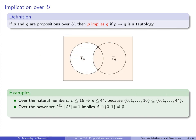Second, over the power set of the integers: the complement of A having size 1 implies that A ∩ {0,1} is non-empty. Having a complement of size 1 means A contains every integer except possibly one. If that's the case, A can't exclude both 0 and 1, so A ∩ {0,1} must be non-empty. So this statement implies that statement.